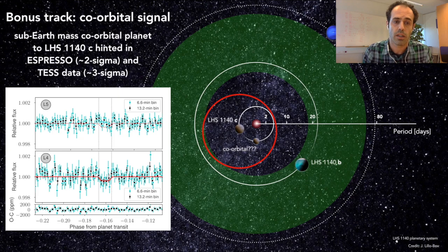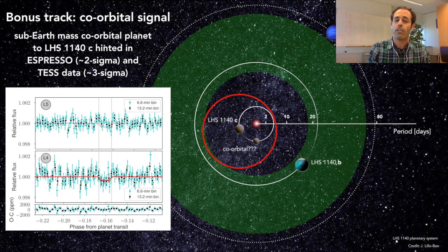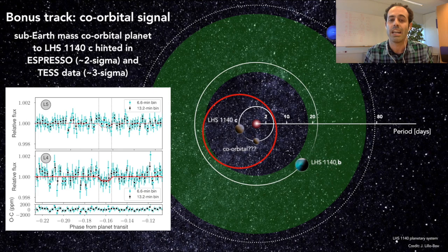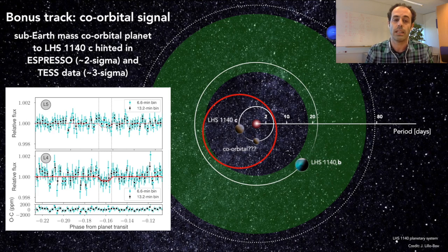As a bonus track, we explore the possibility of co-orbital worlds to the two confirmed planets. We found no evidence of co-orbitals in the habitable zone planet but we found positive evidence for a small co-orbital of the inner world at its Lagrangian point L4 although with no statistical significance with the current radial velocity dataset.